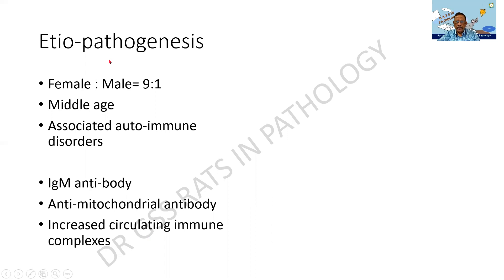Coming to the etiopathogenesis: it is mainly a female disorder — the female to male ratio is 9 to 1. It is a disorder of the middle age and is associated with other autoimmune disorders, which is why the female predilection is there. The antibodies involved are the IgM antibody, anti-mitochondrial antibody, and there can also be circulating immune complexes.